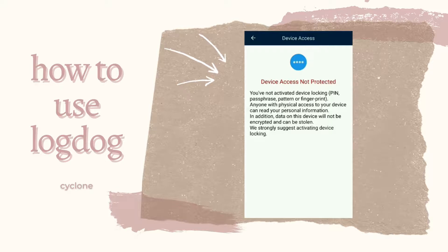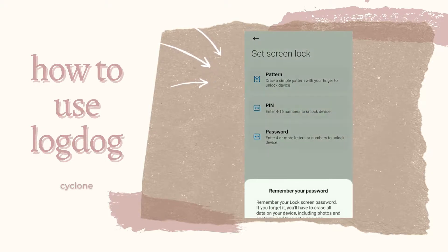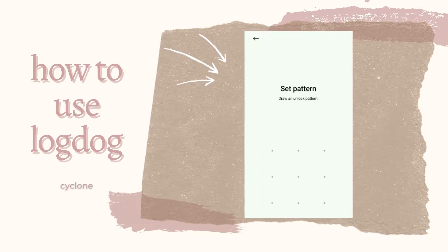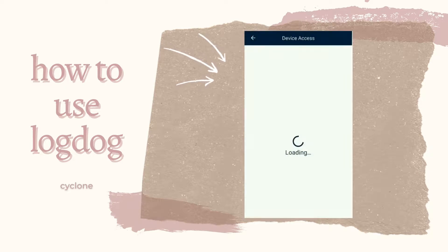As we can see here, this Android device is unprotected and can be accessed by someone else. So this app recommends setting a screen lock. And now this device's access is protected.